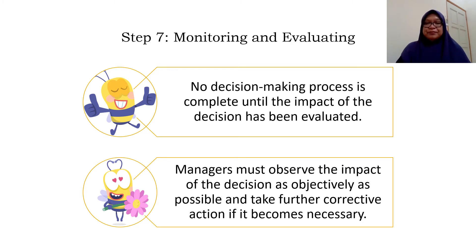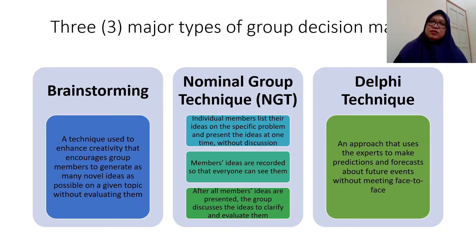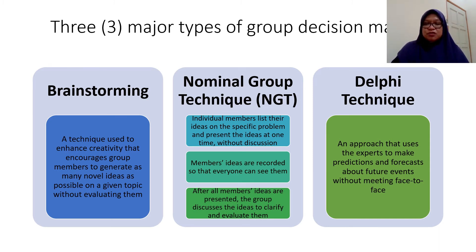Under decision making, mostly managers will make decisions on their own. However, sometimes a manager can also invite people or make decisions in a group. There are three major types of group decision making, where the manager makes decisions collectively rather than alone.